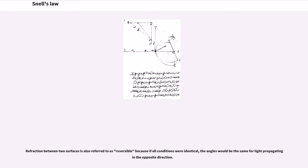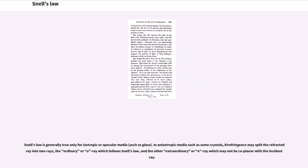Refraction between two surfaces is also referred to as reversible because if all conditions were identical, the angles would be the same for light propagating in the opposite direction. Snell's law is generally true only for isotropic or specular media. In anisotropic media such as some crystals, birefringence may split the refracted ray into two rays: the ordinary or O ray which follows Snell's law, and the other extraordinary or E ray which may not be coplanar with the incident ray.